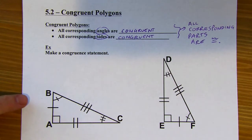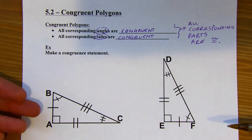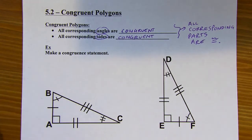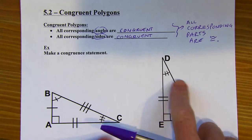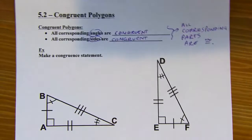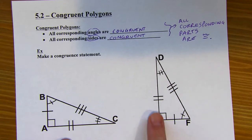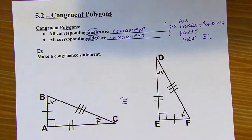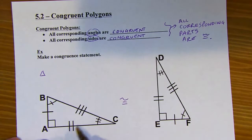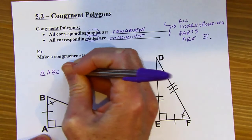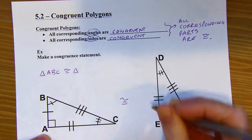We've got two triangles here, so let's make a congruent statement. I can tell that the triangles themselves are congruent because I can see all of the angles have matching angles, and all of the sides also have matching congruent sides. So I can say that these whole triangles are congruent. I can name the first triangle however I want — I'm going to call this triangle ABC.